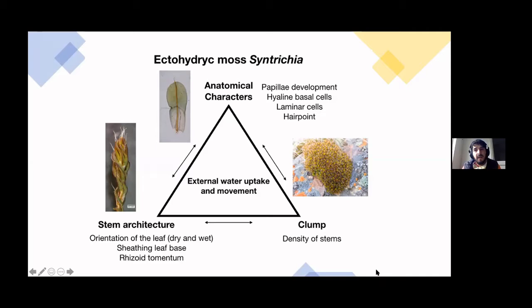The hyaline basal cells - these basal cells are at the base of the leaf. They are porous and dead. They remain very steady when the moss is dry. So they remain in the same position. They don't break compared to other cells. And the hair point is this kind of projection of the costa that also could help to catch water.